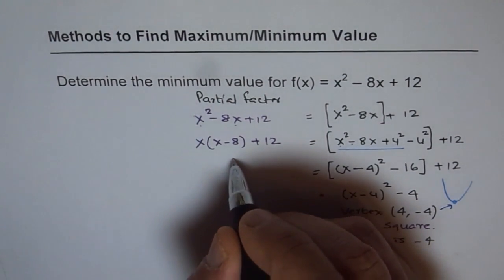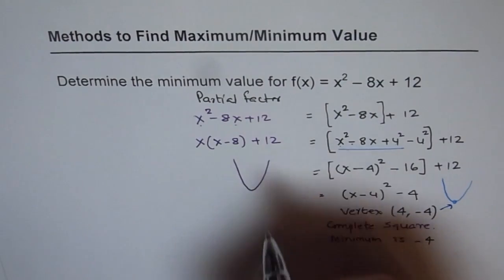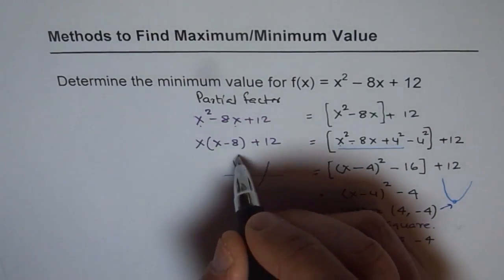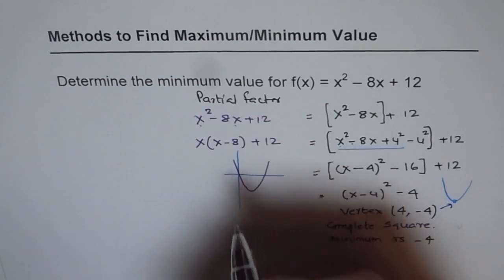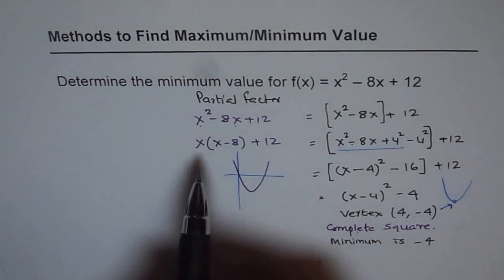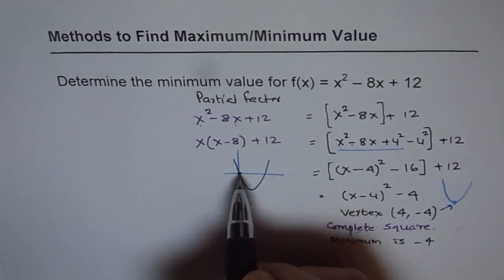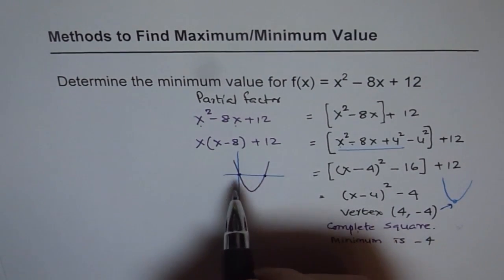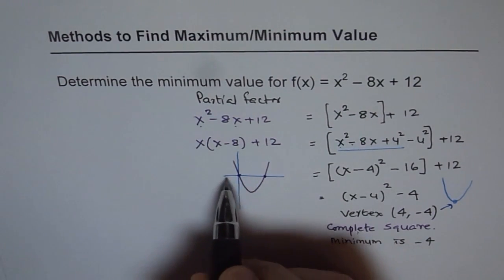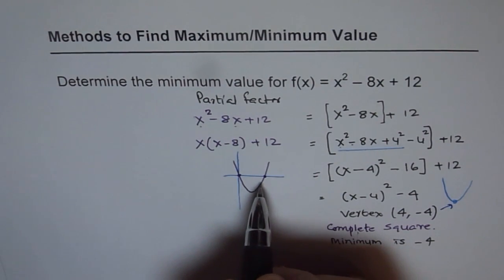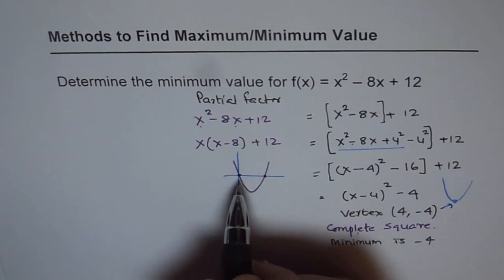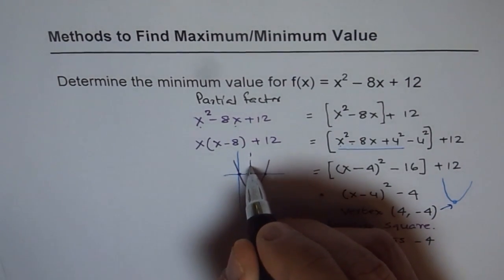If you sketch it, you'll see that if you draw a horizontal line, at x equals 0 and at x equals 8, the value of the function will be 12. This horizontal line gives you the value of the function at those two points. Now, the axis of symmetry will be right in between. Every parabola will have an axis of symmetry, meaning the points on either side are symmetric when you draw a horizontal line.